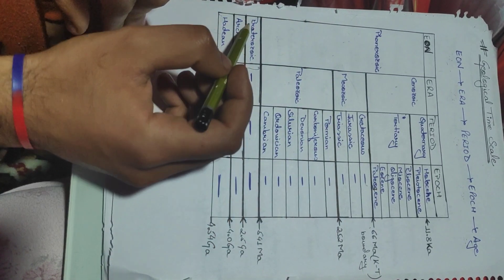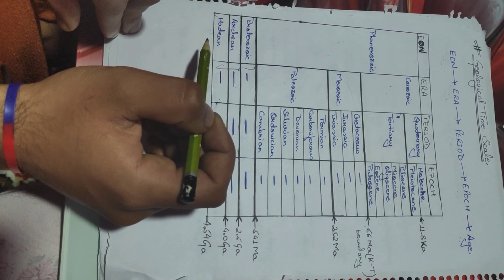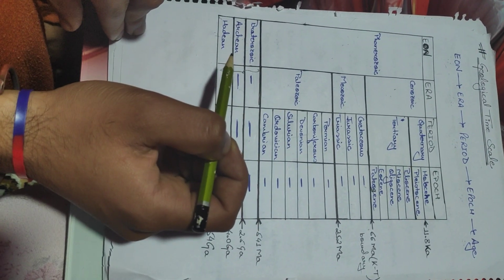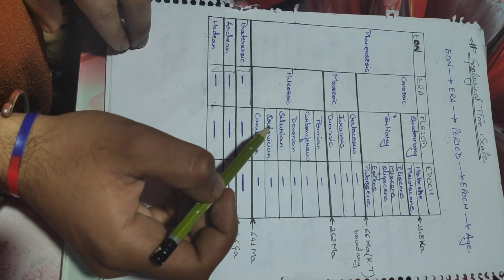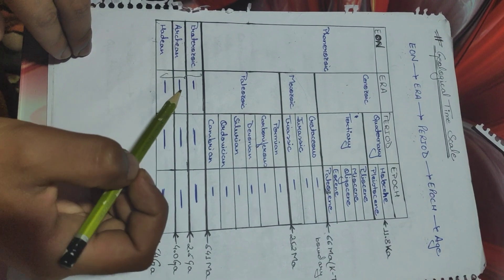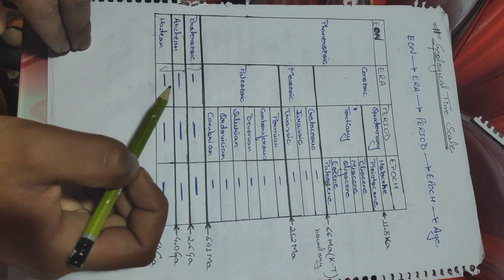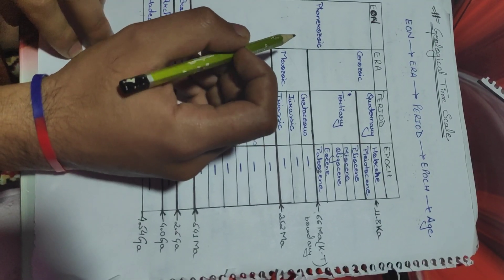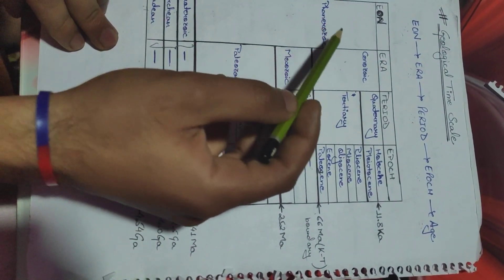Our main focus in today's video is how we can summarize all these different divisions of the geological time scale easily and systematically. It is very difficult to memorize all these divisions systematically, so I have made this video to learn them by just three simple sentences. For Eon, we have just four different divisions.